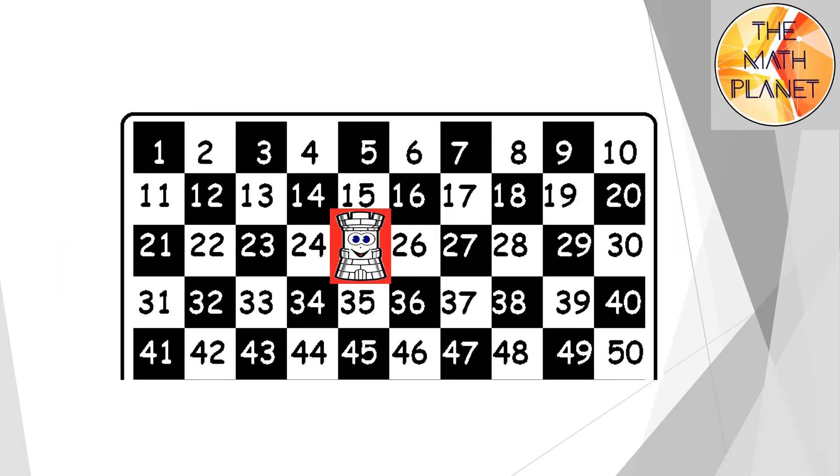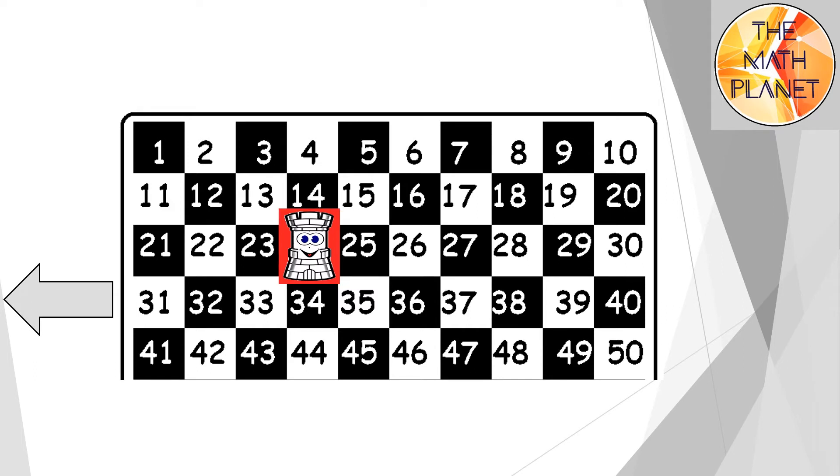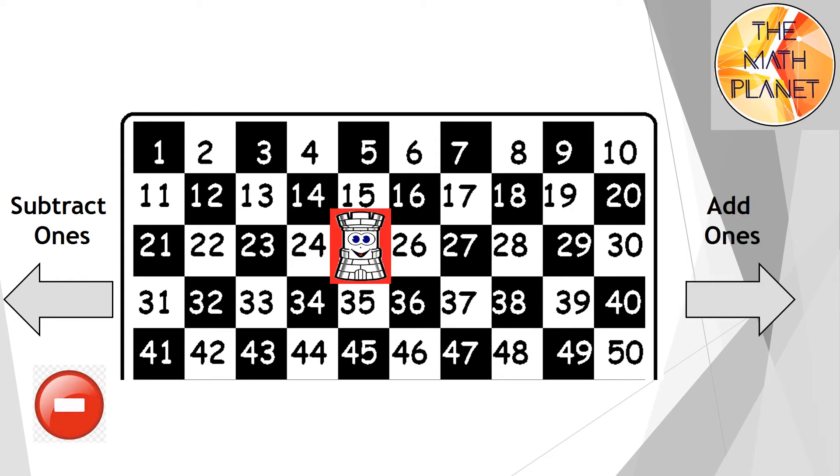And here's the chart again. If I move to the left of the chart, I subtract ones or perform a minus operation. While if I move to the right, I add ones or perform an addition operation, which we need for today's lesson.